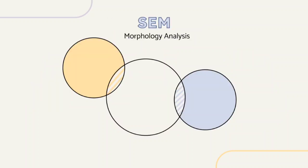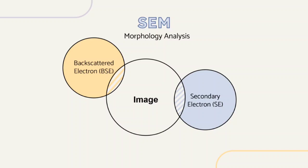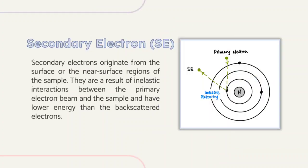SEM undergoes morphology analysis through two imaging modes: secondary electron, SE, and backscattered electron, BSE, where these two imaging modes work by collecting emitted electron signals from a sample. Secondary electrons originate from the surface or near-surface regions of the sample. They are a result of inelastic interactions between the primary electron beam and the sample, and have lower energy than the backscattered electrons.